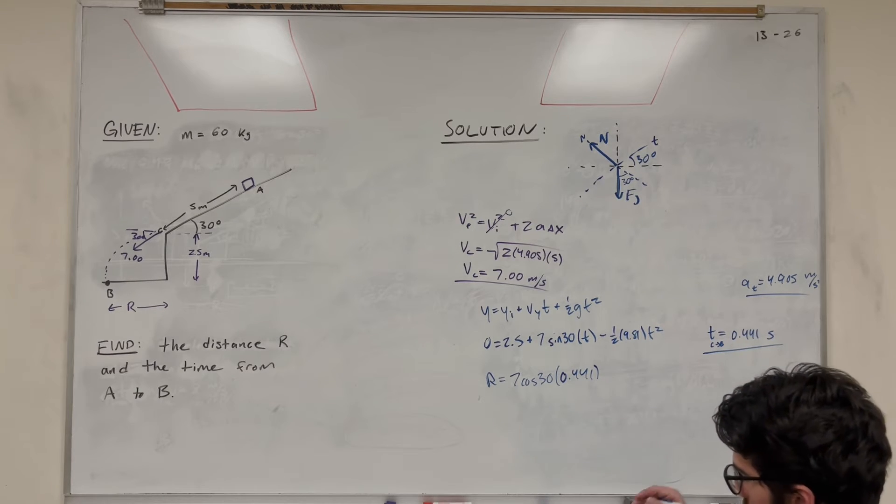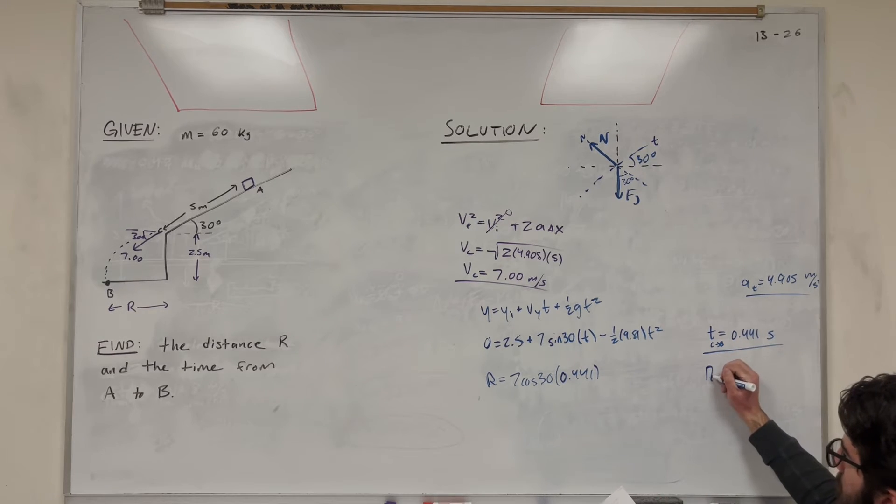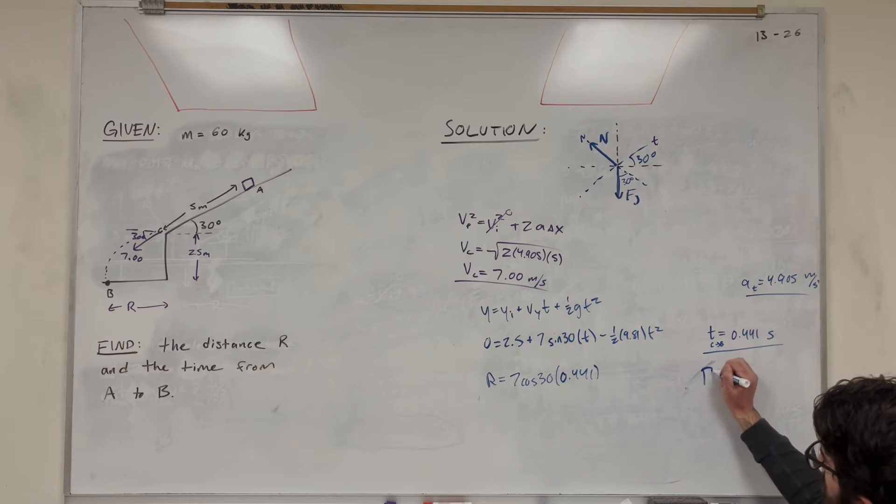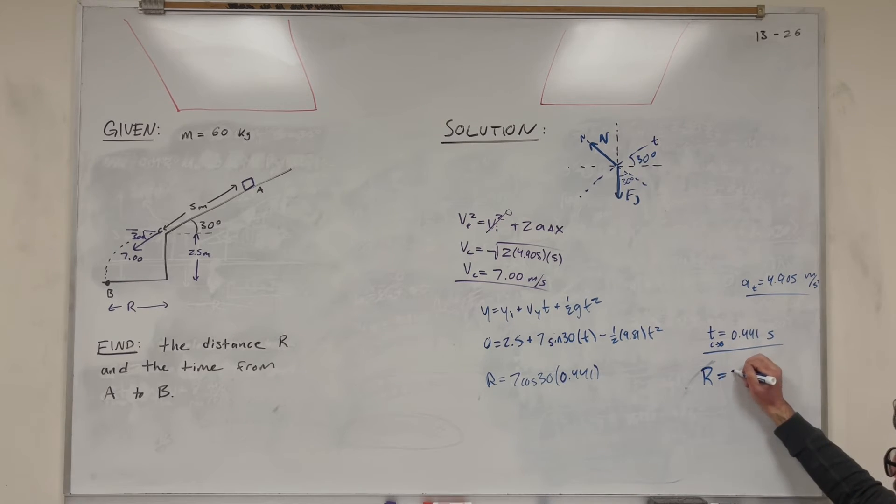So we got this. You find that that R value, that's what we're solving for, is equal to 2.868 meters. And that's our final answer for part A.